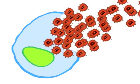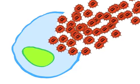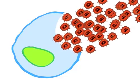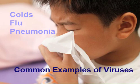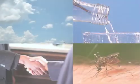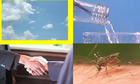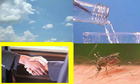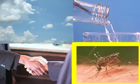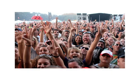The cell is sometimes destroyed and many new viruses are quickly released to infect other cells. Colds, flu, and some forms of pneumonia are common examples of viruses. These viruses can be spread through the air, food and water, handshakes, and insect bites.